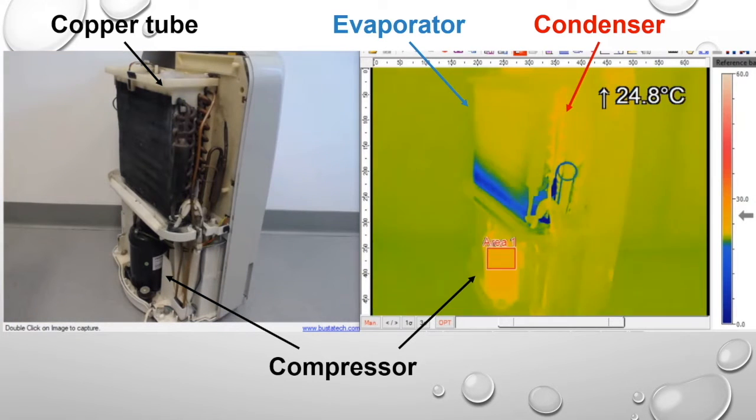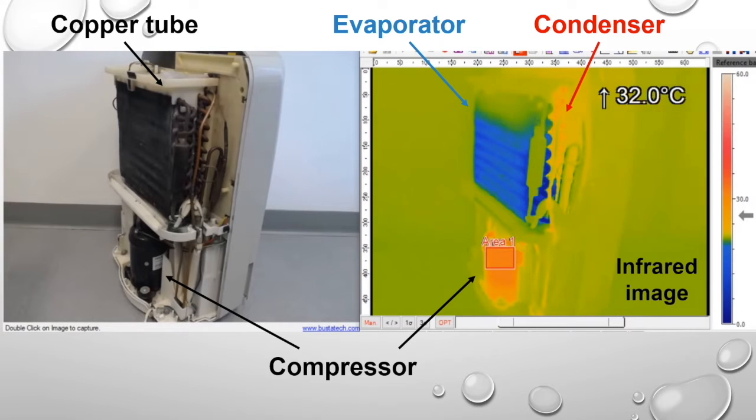When we turn on the compressor, it will generate a pressure difference between the evaporator and the condenser. The evaporator will cool down as seen in the infrared video on the right, while the heat is transferred to the condenser. That is why the temperature at the back side of the copper tube increases.